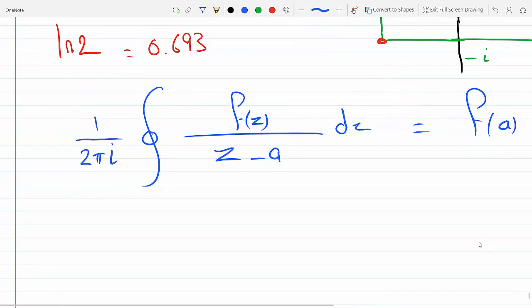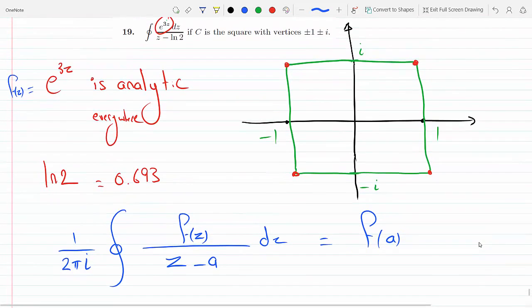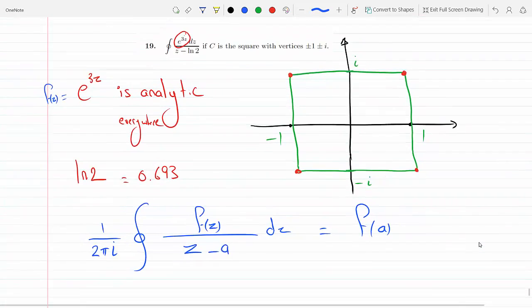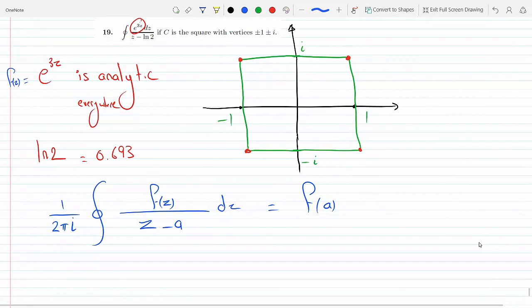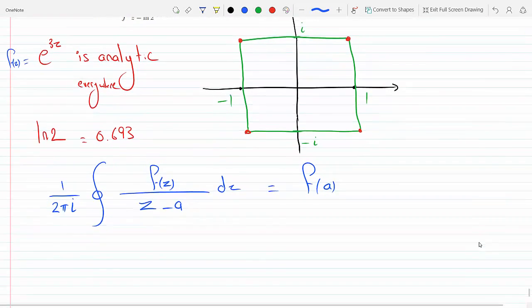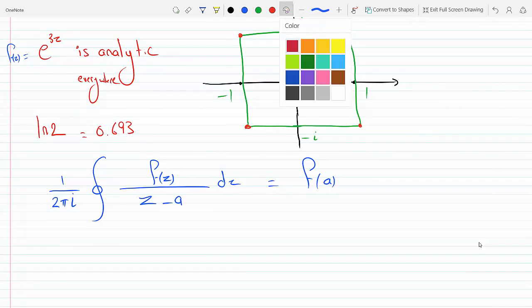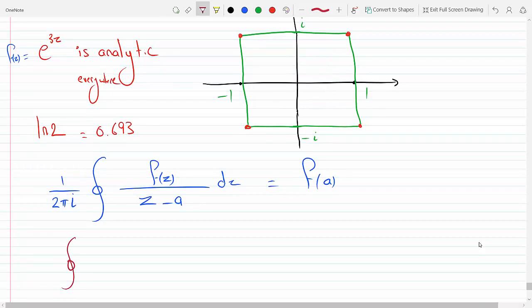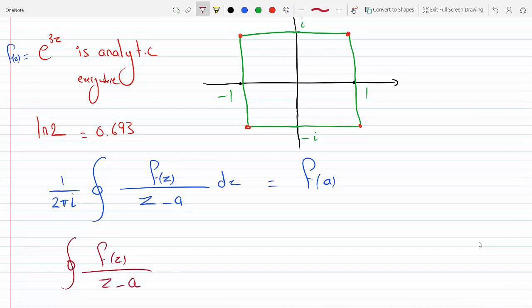Well then that means this satisfies this. So f(z) is e^(3z), so that means I can immediately say that the closed integral of f(z)/(z-a) dz has to equal f(a) times 2πi.